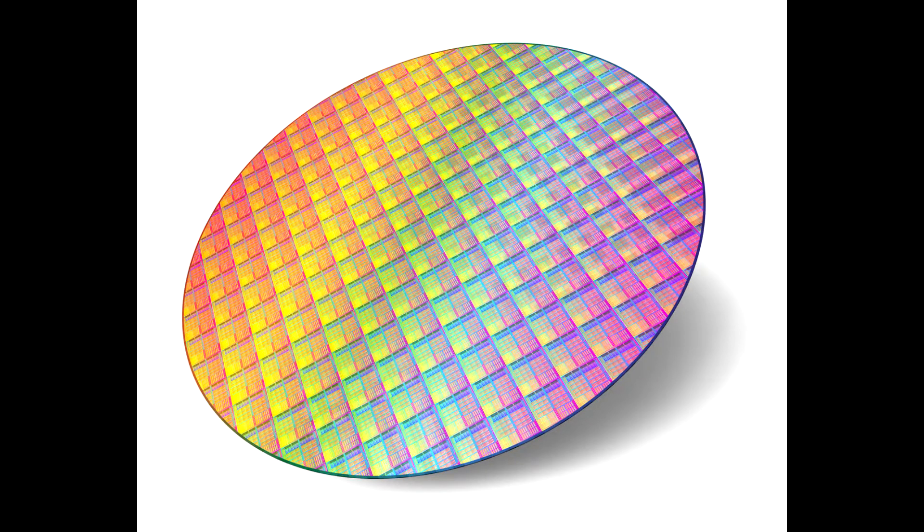Construction of 3nm manufacturing facilities are set to begin in 2020 when TSMC will lay the groundwork for the new fab. The 3nm semiconductor node is expected to be TSMC's third attempt at EUV lithography, right after the 7nm+ and 5nm nodes which are also based on EUV technology.